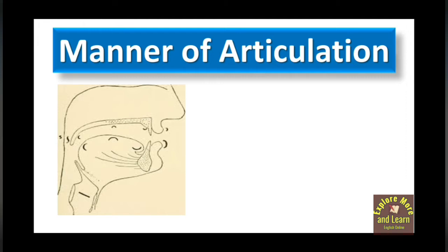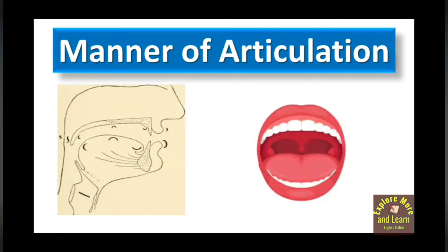When speech organs interact with each other, air is obstructed and released, and a sound is created. Organs of speech like the lower lip, upper lip, lower teeth, upper teeth, and various parts of the tongue — when they come close to each other, air is obstructed and suddenly released. This is what manner of articulation is, and there are various ways sounds are created, which I am discussing in this series.